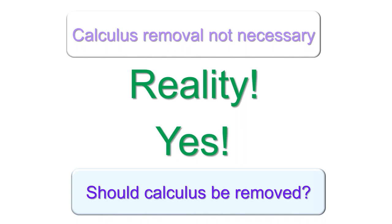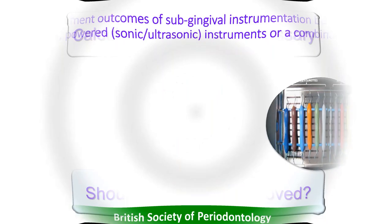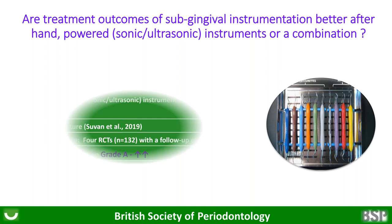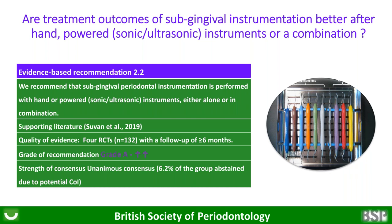Are treatment outcomes of subgingival instrumentation better if you use hand-powered instruments? The evidence going back to 1981 and 1984 and Anita Baddison's papers shows no difference in outcome between hand and ultrasonic instruments — the grade of recommendation is the strongest grade. It doesn't matter what you use. This has helped us through COVID by being able to work using hand instruments. Our students have become phenomenally skilled using only hand instruments, though my worry is they might over-instrument, so we've now got them back on ultrasonics as well.